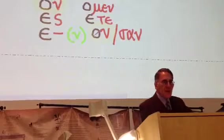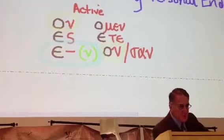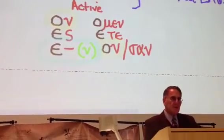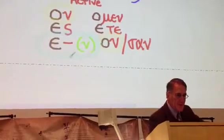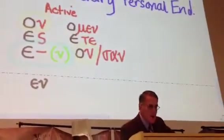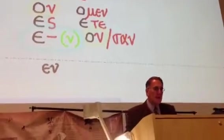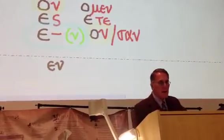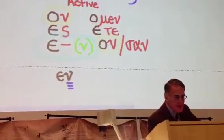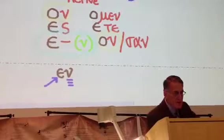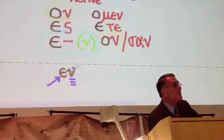Now, on the other hand, if you see an epsilon nu — and the movable nu, when you see it out there in the New Testament, is not going to have the benefit of the parentheses, it's just going to show up this way — when you see the epsilon nu, you know that that can't be an ending. That nu cannot be an ending, because a nu would have to have a connecting vowel of omicron, not epsilon. So you know that that has to be a movable nu.